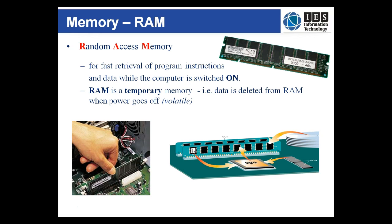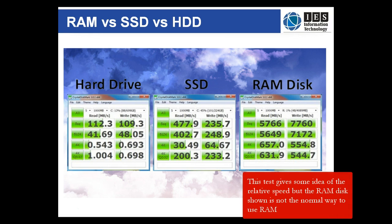Volatile storage is storage that is lost when the power goes off. RAM is electronic and therefore volatile, because electronic storage provides the fastest reading and writing of data.